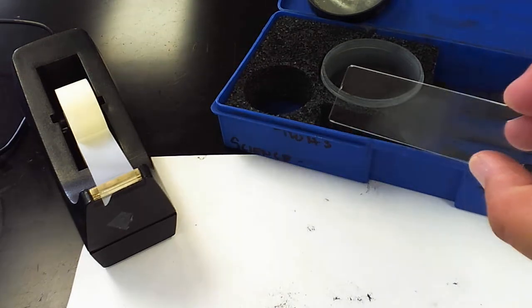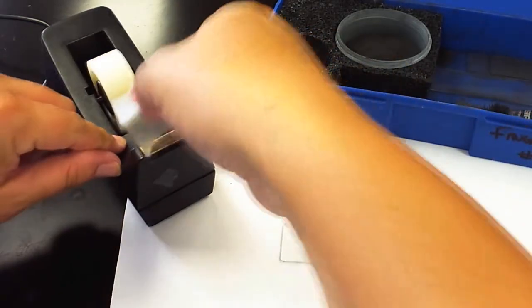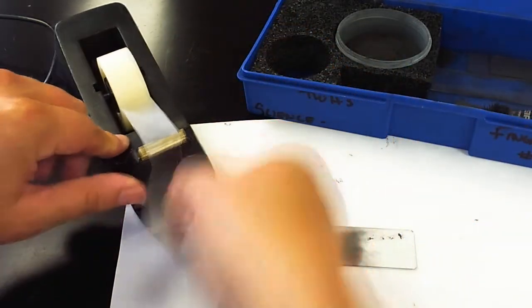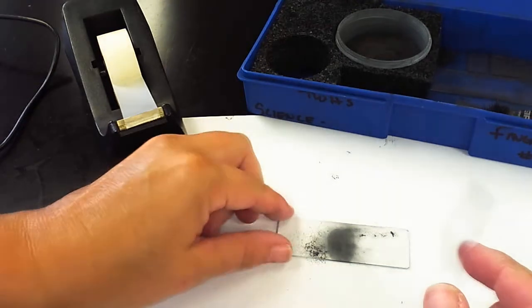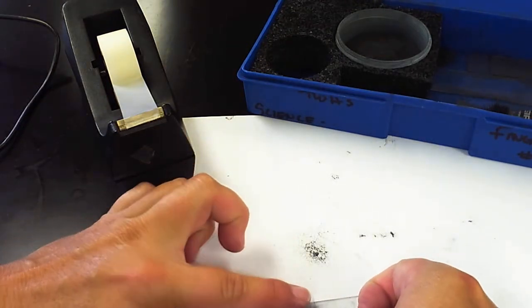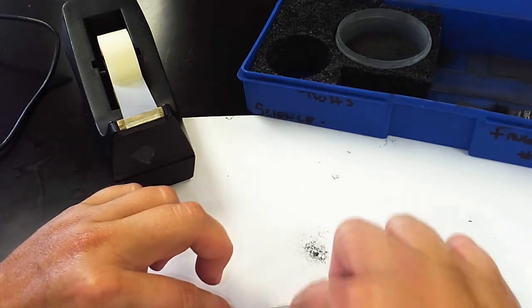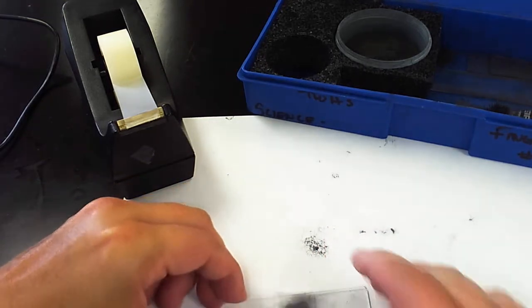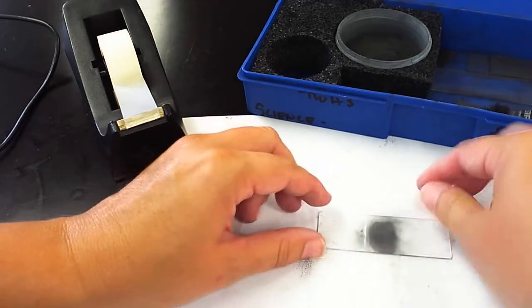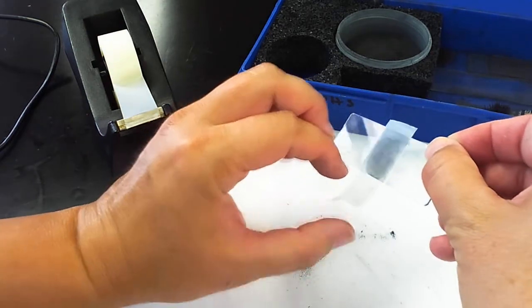So now that I have the powder on my fingerprint, what I'm going to do now is I'm going to use some tape to try to lift it. Again, this takes some practice. So I'm going to put the tape very carefully over top of my fingerprint, and I'm going to try to make sure I get all of the air bubbles. I'm going to make sure I get all of the air bubbles out by kind of rubbing it back and forth on top of the tape.